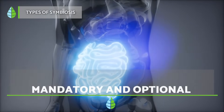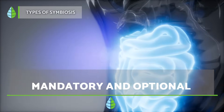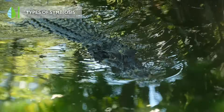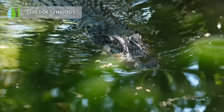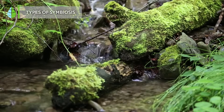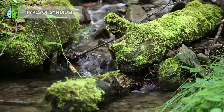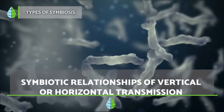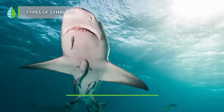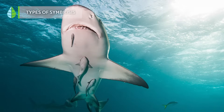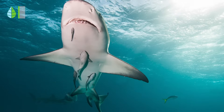Symbiotic relationships can also be classified as mandatory, when the relationship is necessary for one of the participants to survive, and optional, when the relationship benefits at least one of the organisms but is not necessary for survival. Lastly, depending on how the relationship was established, a distinction can be made between vertical transmission, when symbionts are transmitted to the offspring, and horizontal transmission, when the host obtains its symbiont from the environment generation after generation.